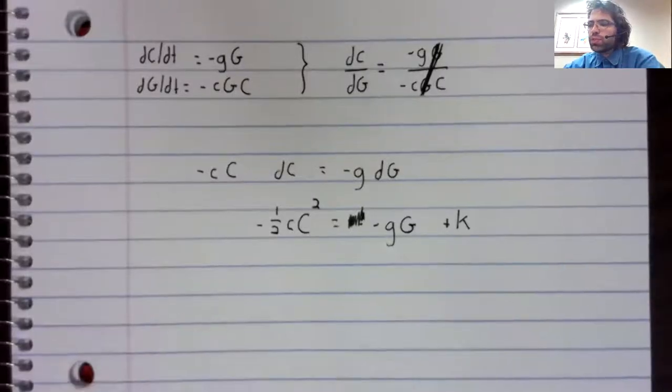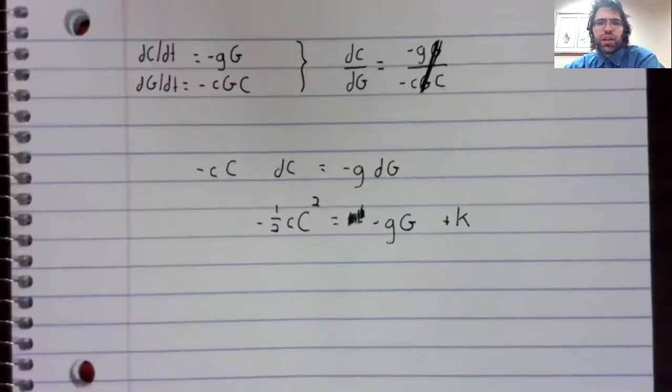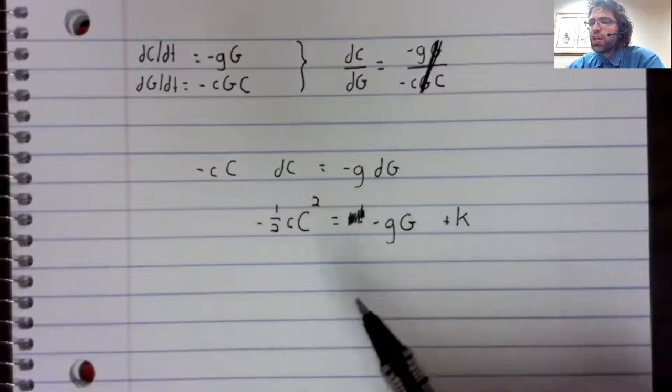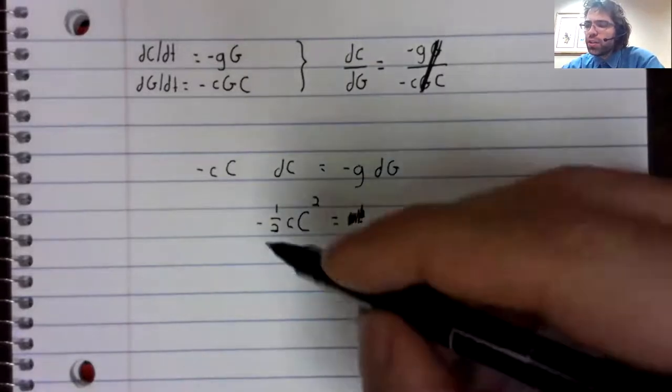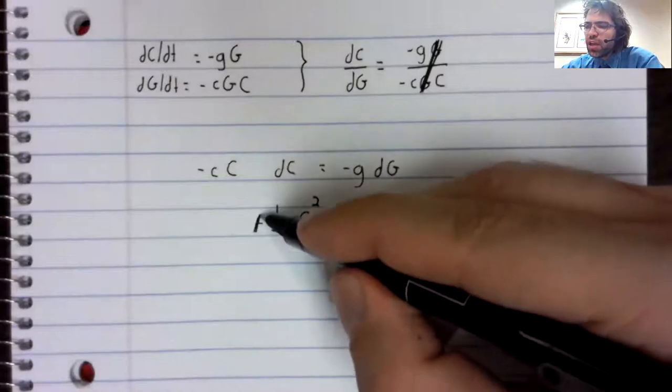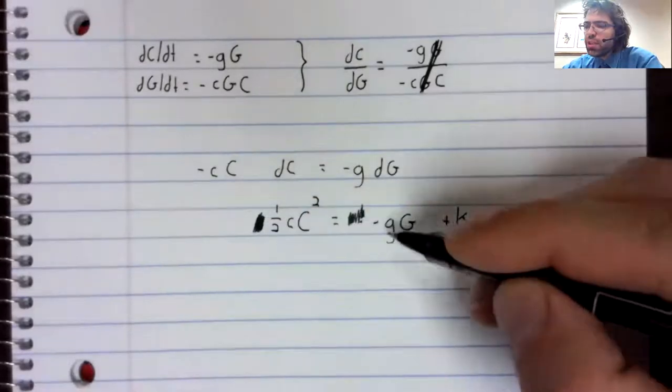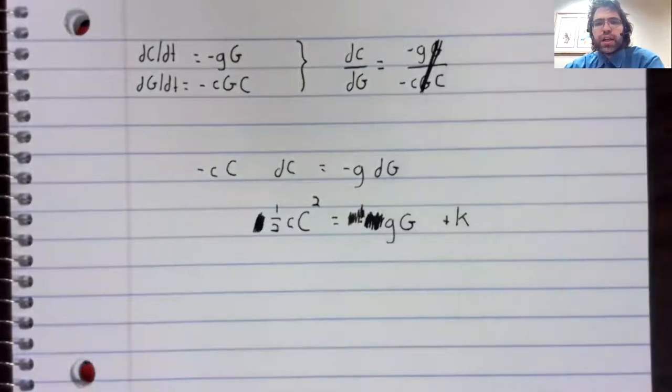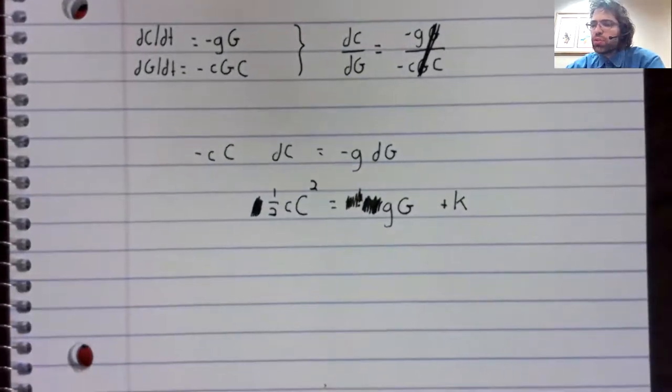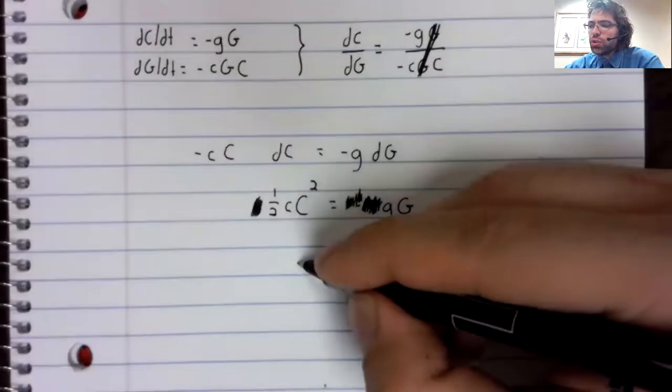We will multiply both sides by, well, first, let's multiply both sides by negative one. These negative signs don't have to be here. And now we'll multiply both sides by two.